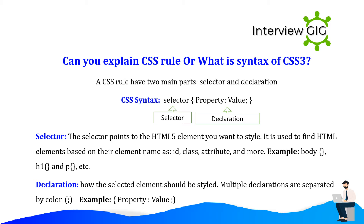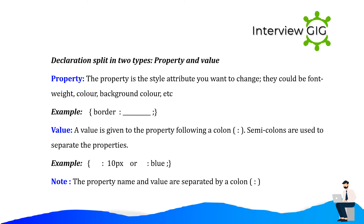Declaration: how the selected element should be styled. Multiple declarations are separated by semicolons. Example: property: value. Declarations split into two types — property and value. The property is the style attribute you want to change, such as font-weight, color, background-color, etc. Example: border. A value is given to the property following a colon; semicolons are used to separate the properties. Example: 10px or blue.